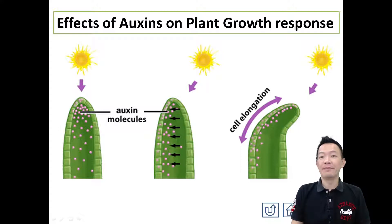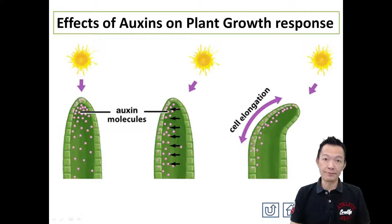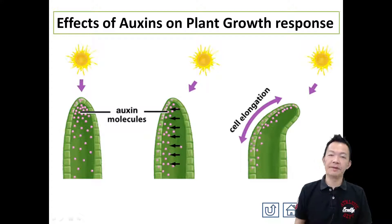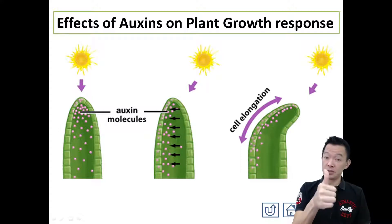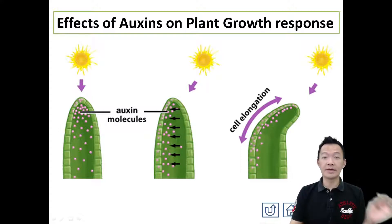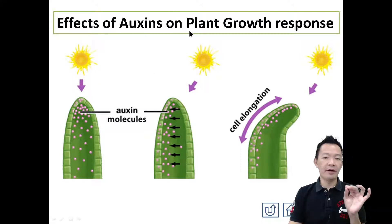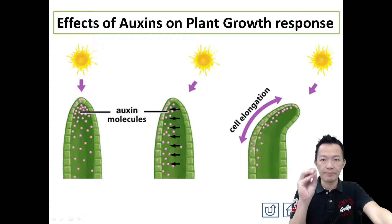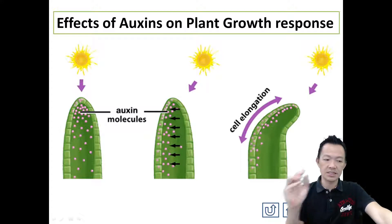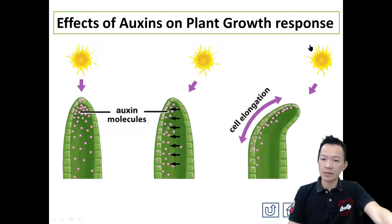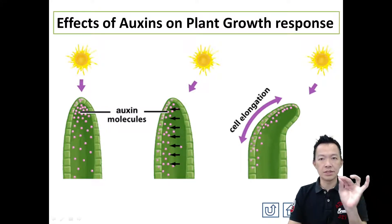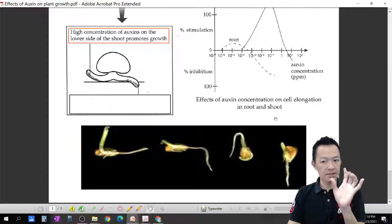Hi, this is Form 5 Biology Chapter 5, video number 5, notes page number 6. We're back again about hormones. This time the title is 'The Effect of Auxin on Plant Growth Response.' As you know, auxin actually promotes plant growth — it stimulates plant growth. So how does auxin affect plant growth? Follow me, we'll go slowly.